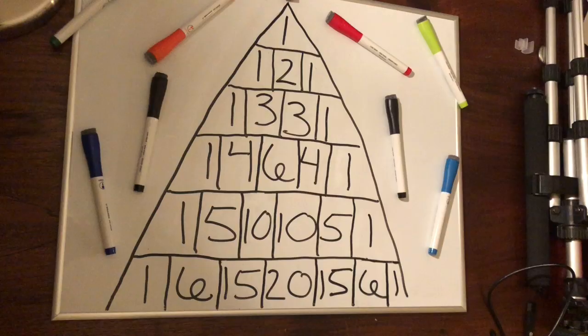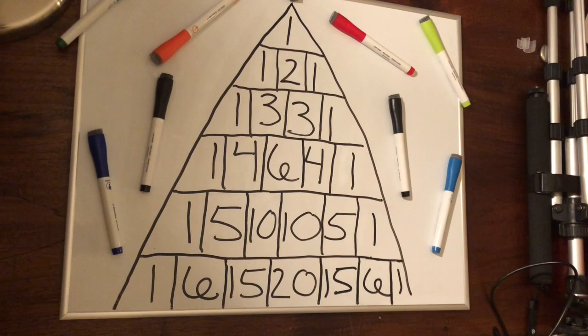This triangular array would later be known as Pascal's Triangle. As you can see, the top number as well as the side numbers are all ones. Now onto the concept of it.